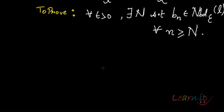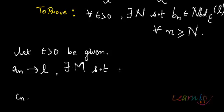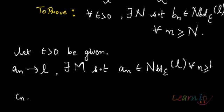So that's what we have to prove, and what we know is about the convergence of a_n and c_n. Let epsilon greater than 0 be given. Since a_n tends to L, there exists some natural number N such that a_n belongs to the epsilon neighborhood of L for all n greater than or equal to this capital N.